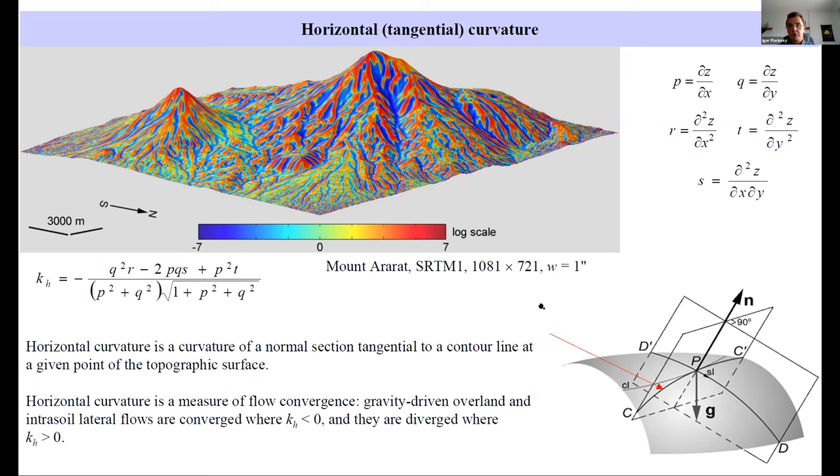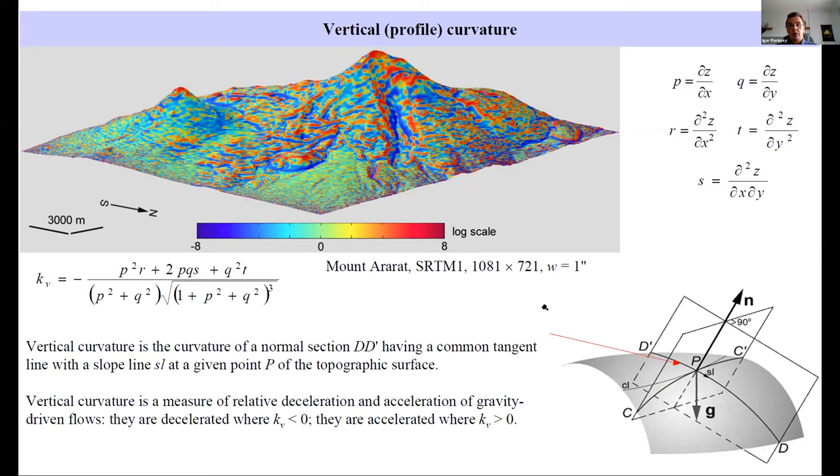From geomorphic point of view, horizontal curvature can reveal spurs, valleys and reaches. Vertical or profile curvature is a curvature of normal section having a common tangent line with a slope line at a given point of the topographic surface. It's a measure of relative deceleration and acceleration of gravity driving flows.